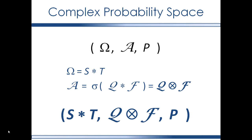The probability measure of the complex probability space does not have to be the product measure — it could contain more information than the probability measures of the original two probability spaces. You could start with two measurable spaces and add a probability measure directly to the complex measurable space, associated with the complex event set. The complex probability space has: the outcome set written as the cross product, the event set written as the sigma algebra of the cross product, and the probability measure — which may or may not be a product measure.